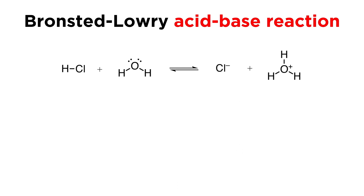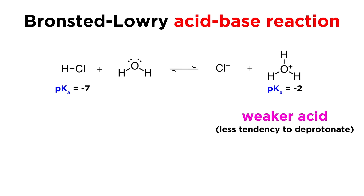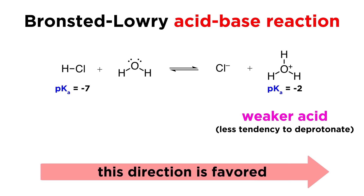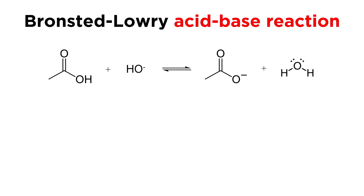For example, looking at HCl and water producing hydronium and the chloride ion: HCl has a pKa of around negative 7, while hydronium is closer to around negative 2. This means that hydronium has less of a tendency to deprotonate than HCl, and is thus the weaker acid, so this equilibrium will favor the formation of these species.